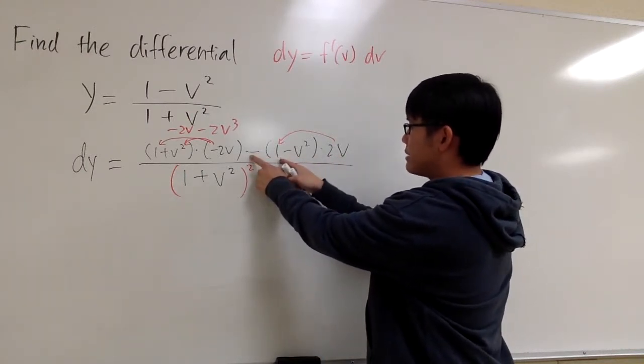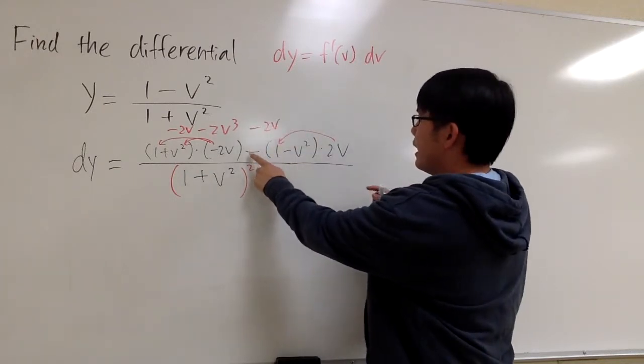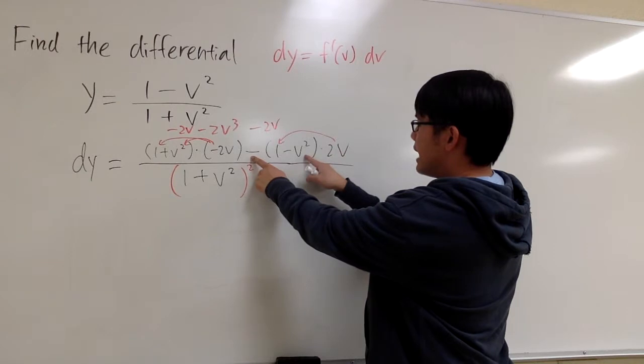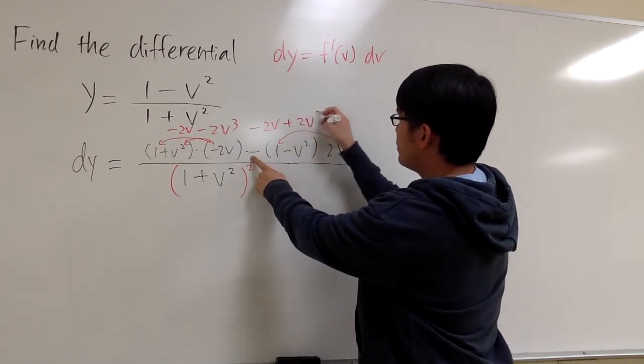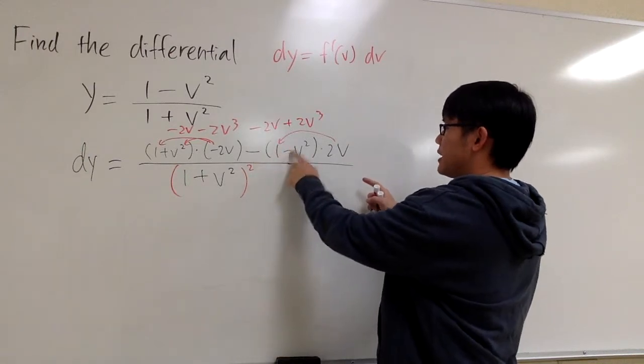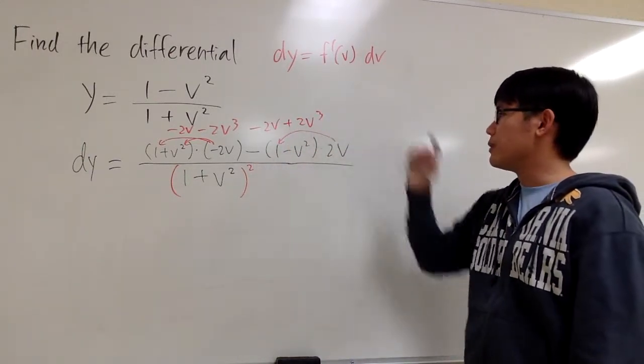2v times 1 is 2v, but it's minus, so it's minus 2v. And then negative times 2v times that, it's going to be adding. We add 2v to the third power. So negative times negative becomes positive. 2v times v squared is 2v to the third power.